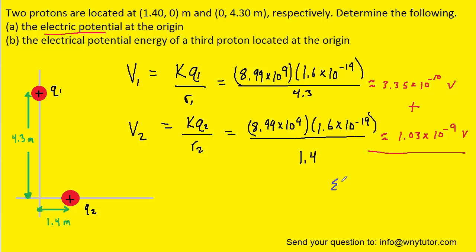And when you do that you get a total electric potential equal to approximately 1.36 times 10 to the minus 9 volts. So this should be the correct answer to part A of the question.